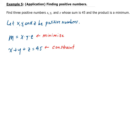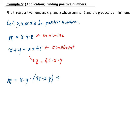We are going to use our constraint to rewrite M in terms of x and y. From our constraint, we can solve for z: z equals 45 minus x minus y. Substituting that back into M gives us x times y times (45 minus x minus y), which expands to 45xy minus x²y minus xy².